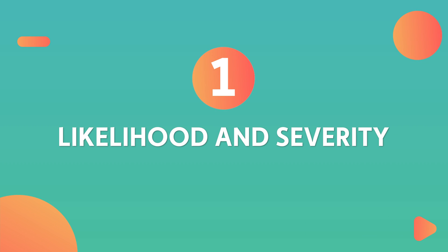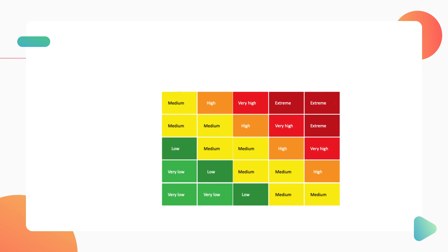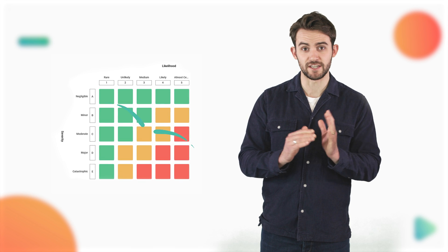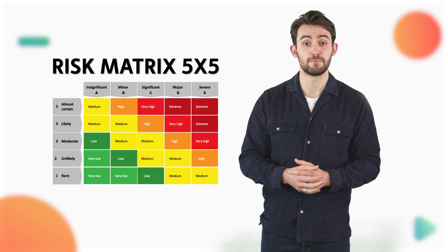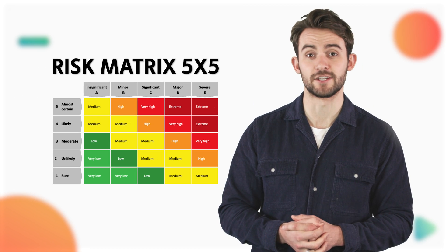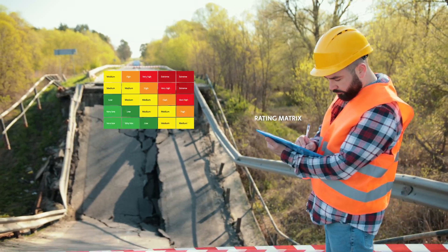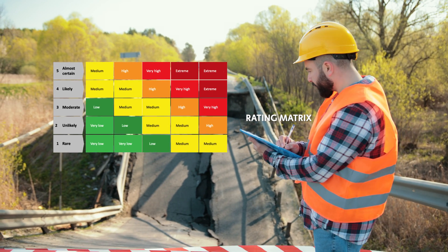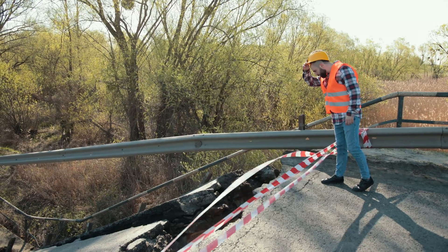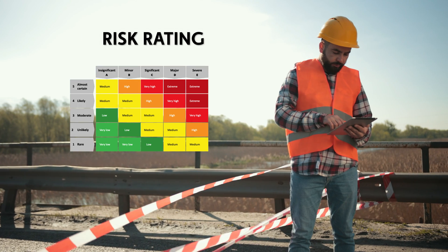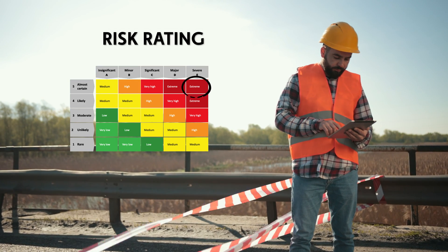Number one: likelihood and severity. A risk matrix is a grid where one axis represents likelihood and the other represents severity. The intersection of each axis is what gives a risk its risk rating. A typical risk matrix is five by five, but can be made bigger or smaller based on an organisation's needs. First, establish the likelihood of an incident occurring and give it a score from one to five. Then determine the severity of the consequences, which will be given a score of A to E. Adding these together is what gives you a risk rating. A1 is very low risk; E5 is extremely high.